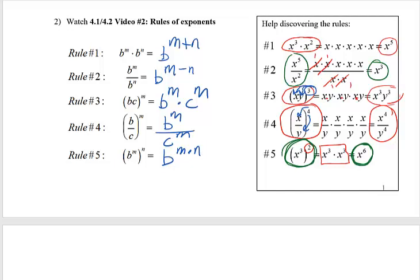I will tell you that the rules people tend to mix up the most are rule one and rule five. Rule one, you add the exponents. Rule five, you multiply the exponents. This is why you really need to work with these rules a lot so that you know when each rule applies.